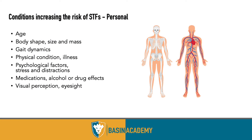Personal risk factors include age, musculoskeletal strength, body shape, size, and mass, gait dynamics, physical condition, illness, physiological factors such as stress and distraction, medications, alcohol or drug effects, and visual perception and eyesight. Breaking it down, there are so many things that can affect someone's balance and center of gravity throughout the day, especially on a job site with uneven surfaces, pit liners, ruts, and scoria — creating a cumulative opportunity for slips, trips, and falls.